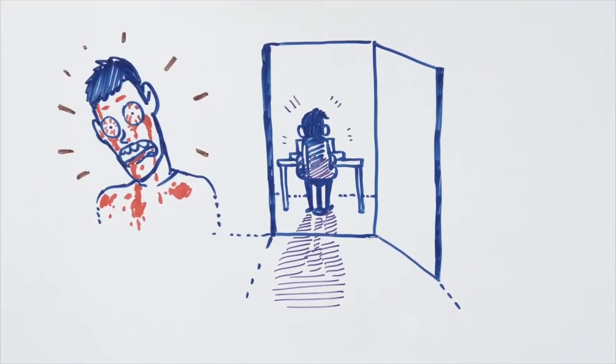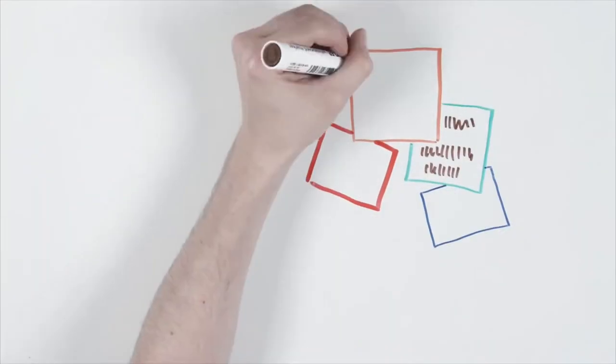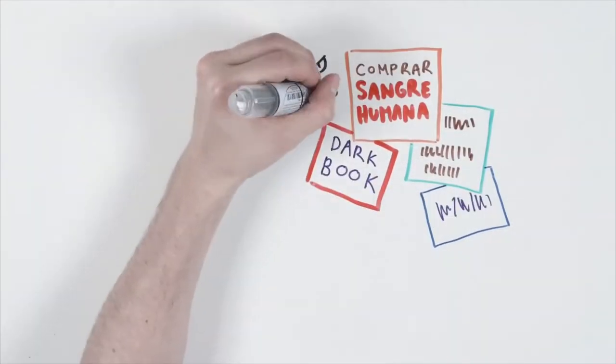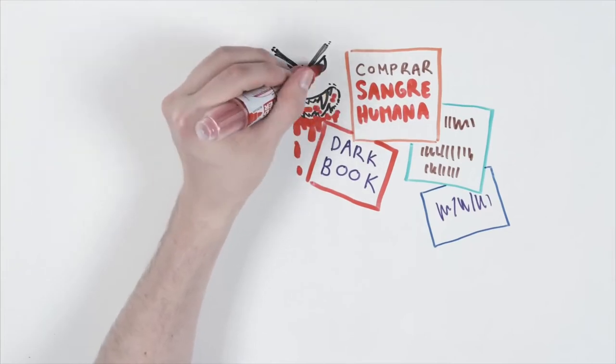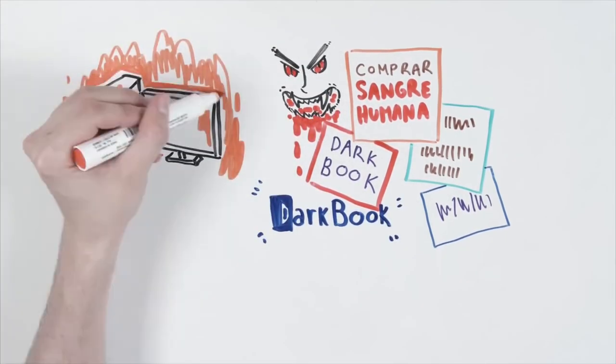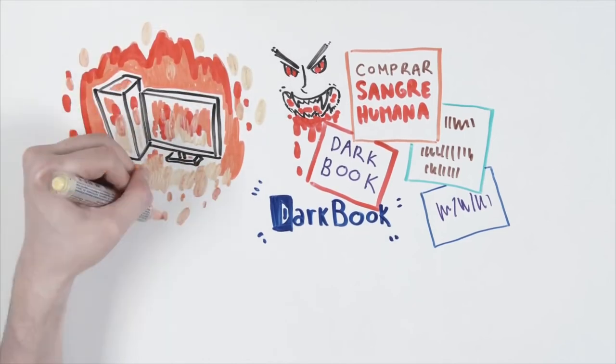The father decides to call the police, but his son is trying to understand what happened. The dead boy had written on some papers all the websites that he had visited, such as a store for buying human blood, the dark book, a Facebook-like social network, and a lot of horrible and gross pictures. The computer circuit resists and it gets burned before they can do any research.